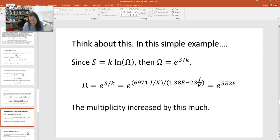Now just for a second, that seems like not such a big number, right? But just for a second, let's think about this because it's pretty mind boggling when you do. S equals k times the natural log of the multiplicity omega. So inversing that and solving for the multiplicity, I have omega equals e to the s over k. Our entropy change for this simple little example was 6,971 joules per kelvin. So I would divide that by Boltzmann's constant, which is 1.38 times 10 to the minus 23 joules per kelvin.